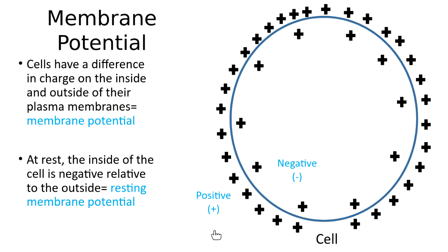A common question is: there are positive charges on both the inside and the outside, so why can we say the inside is negative? The reason is that the inside is less positive than the outside, and another way of saying the inside is less positive is simply to say the inside is negative relative to the outside. So this difference in charge on the two sides of the membrane is our membrane potential.